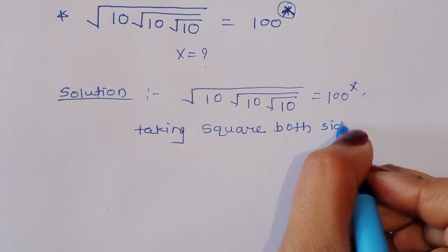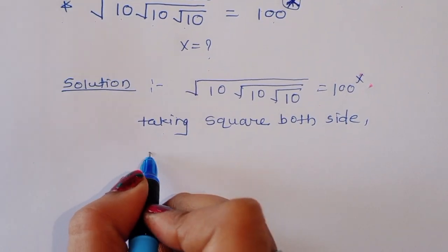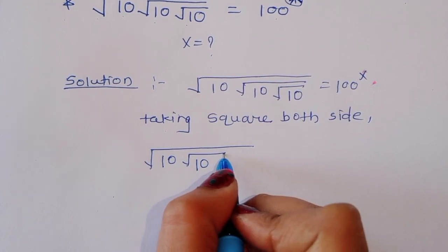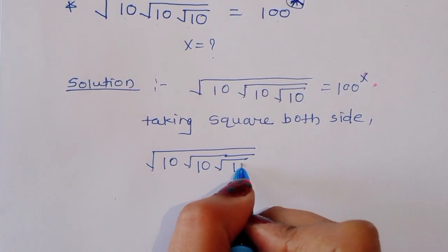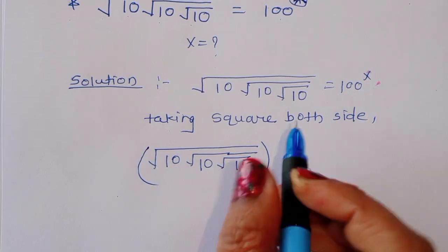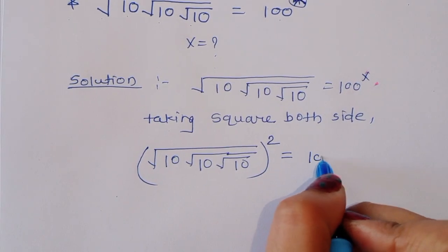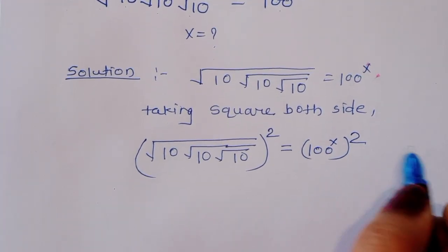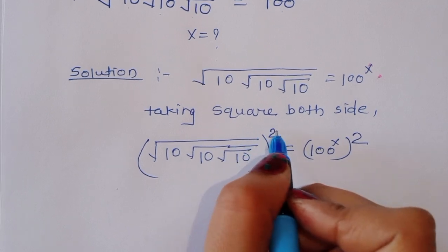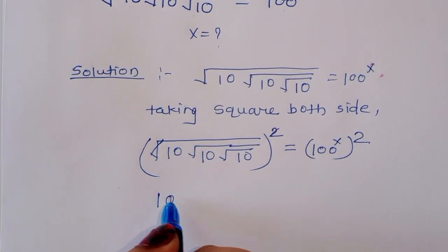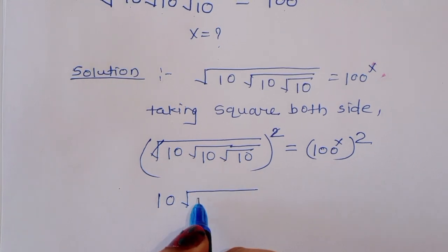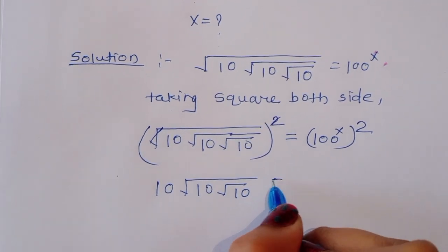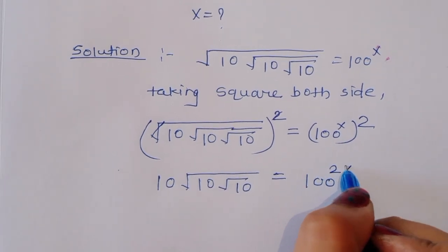Taking square both sides, we will get: square root of 10, square root of 10, whole square is equal to 100 raised to x, square. Now we can write this as: 10, square root of 10, square root of 10 is equal to 100 raised to 2x.